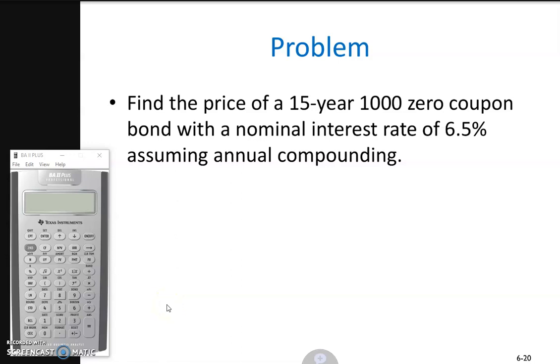This problem asks us to calculate the price of a 15-year $1,000 zero coupon bond with a nominal interest rate of 6.5% assuming annual compounding. We have the time to maturity, n, equal to 15.